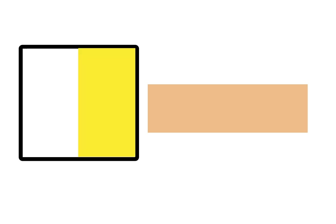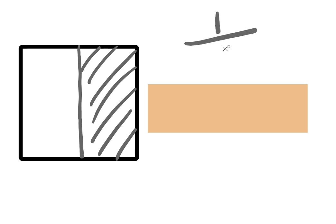Now, yesterday we looked at fractions — halves and quarters — and something came up that I wanted to talk about. If I draw a shape and cut it in half, that's one part of a shape that was cut into two, both parts the same size. That is a half. One part of a shape that was cut into two, all parts the same size.